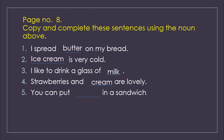Number five: you can put dash in a sandwich. The answer is cheese — you can put cheese in a sandwich. Now repeating all the sentences with spellings: I spread butter on my bread — B-U-T-T-E-R. Ice cream is very cold — I-C-E C-R-E-A-M. I like to drink a glass of milk — M-I-L-K. Strawberries and cream are lovely — C-R-E-A-M. You can put cheese in a sandwich — C-H-E-E-S-E.